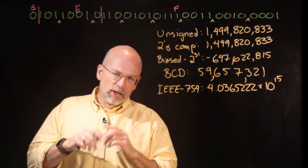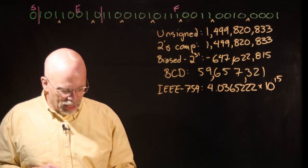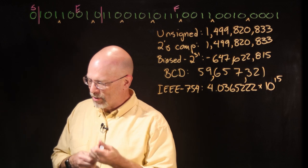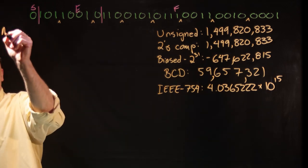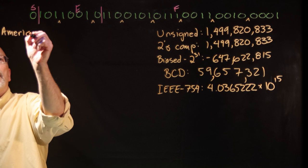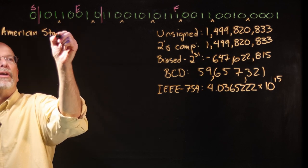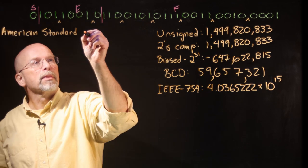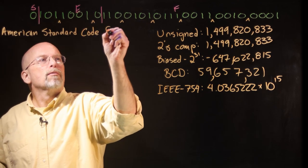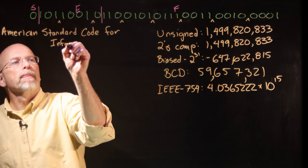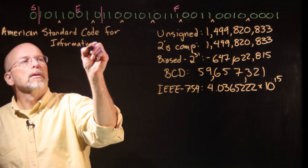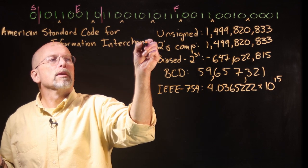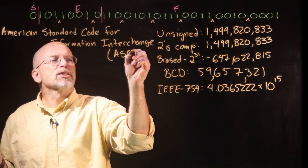Now, in the 1960s, early 1960s, a group of people got together and came up with something. And we'll go ahead and write this down. This would be the American Standard, and it's a code for information interchange, otherwise known as ASCII.